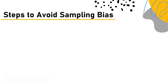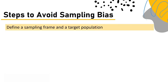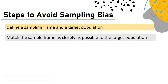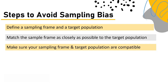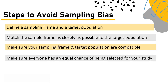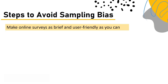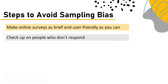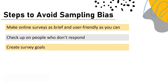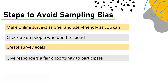Steps to avoid sampling bias: Define a sampling frame and a target population; match the sample frame as closely as possible to the target population; ensure compatibility between your sampling frame and target population; make sure everyone has an equal chance of being selected; make online surveys brief and user-friendly; follow up with people who don't respond; create clear survey goals; and give respondents a fair opportunity to participate.